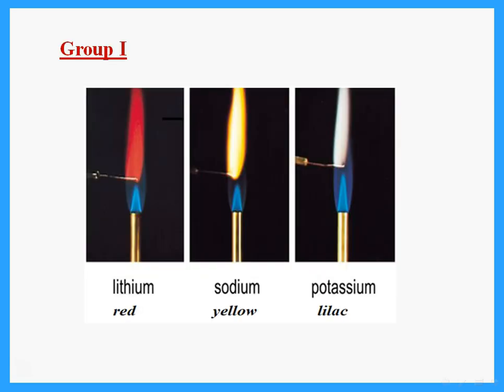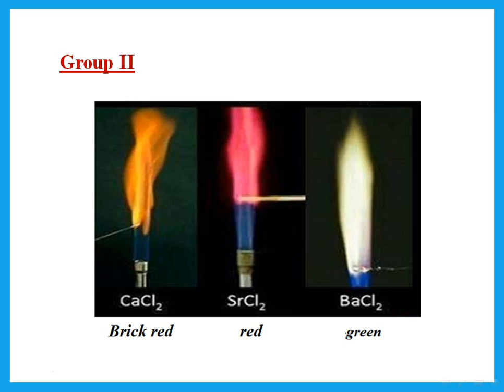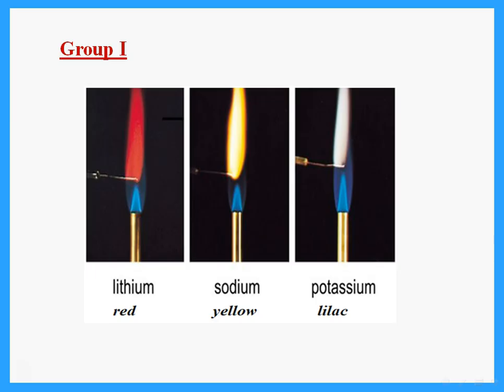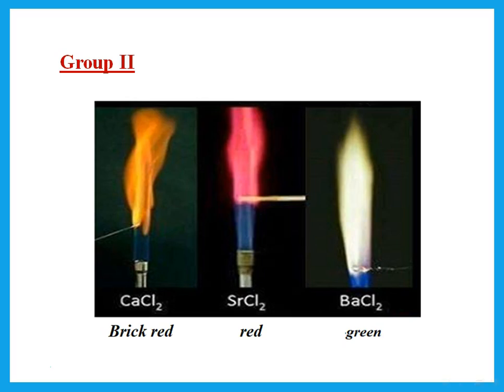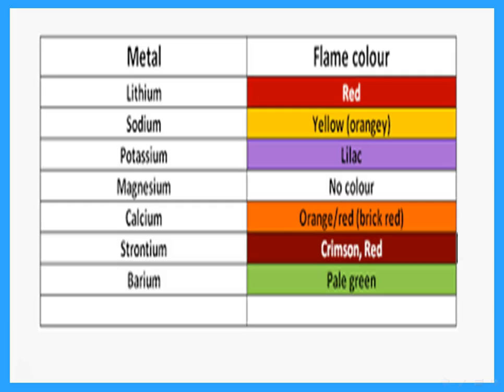The flame test colors to learn: Li⁺ gives red; Na⁺ gives yellow; K⁺ gives lilac. In Group 2: Ca²⁺ gives brick red; Sr²⁺ gives red (similar to lithium but slightly different); Ba²⁺ gives apple green or pale green. Magnesium gives no color because the light emitted is not in the visible region.